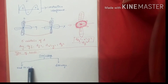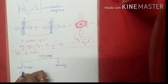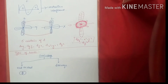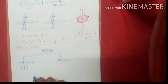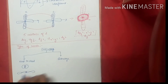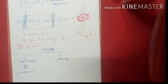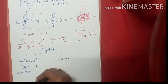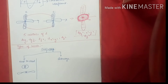Whenever there is head-to-head overlapping, it leads to the formation of a Sigma bond. For example, if there are two s orbitals they will form a Sigma bond. If there are p orbitals, they can also form a Sigma bond. So whenever there is head-to-head overlapping it leads to the formation of a Sigma bond.